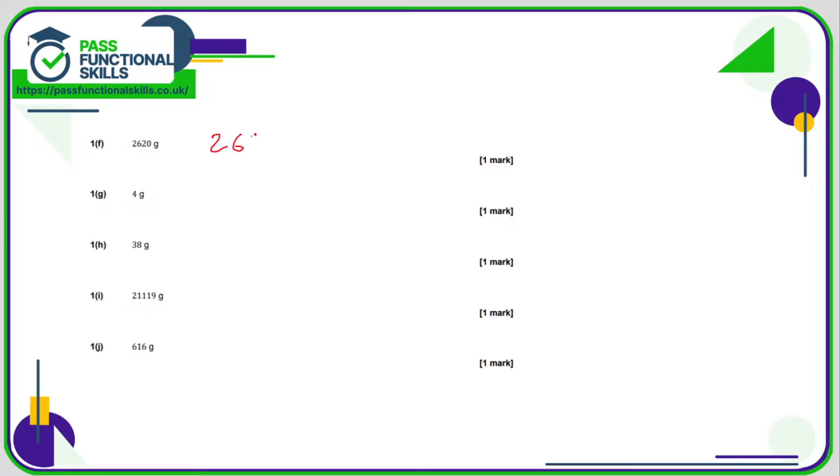2620 is 2620.0. Which we need to divide by 1000. So 1, 2, 3. 2.62.